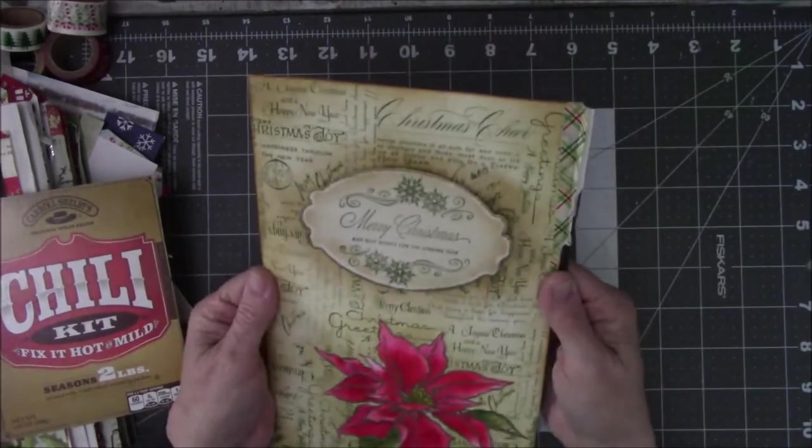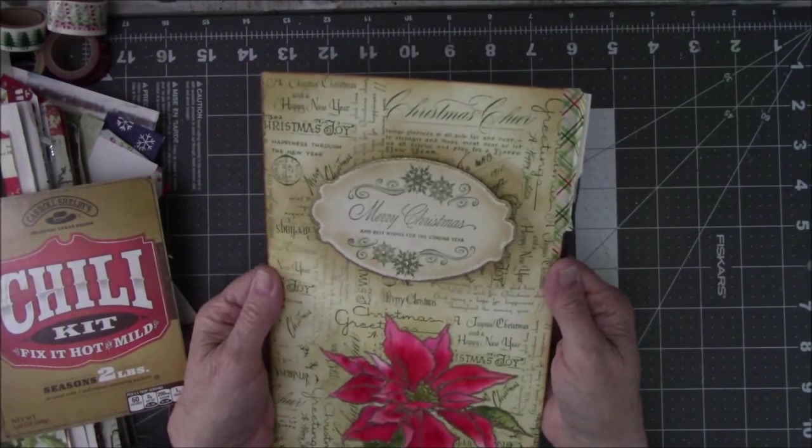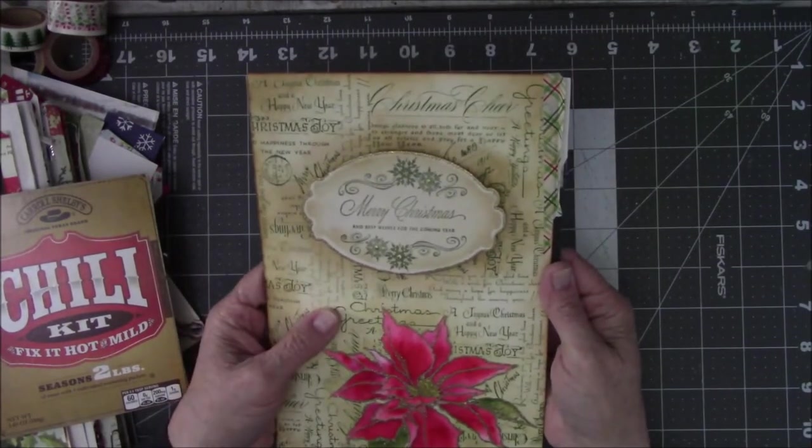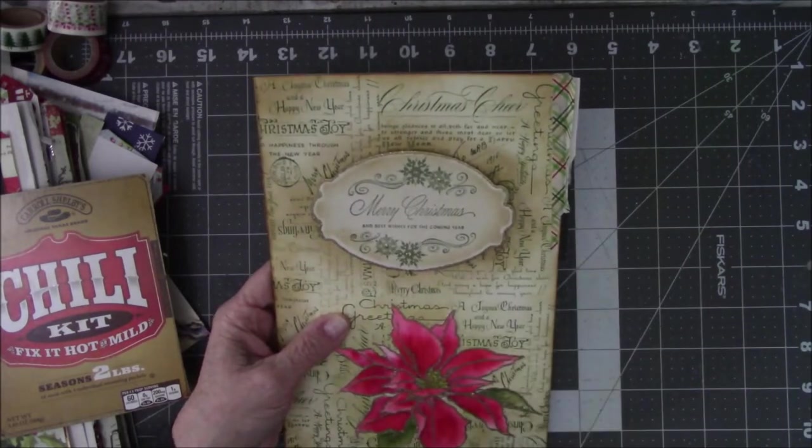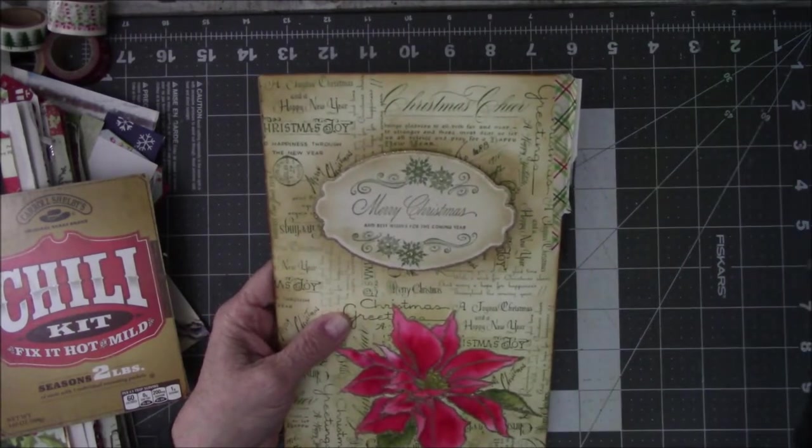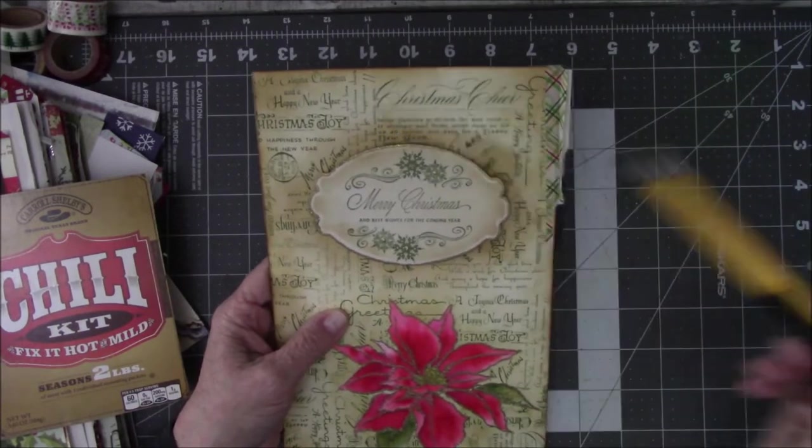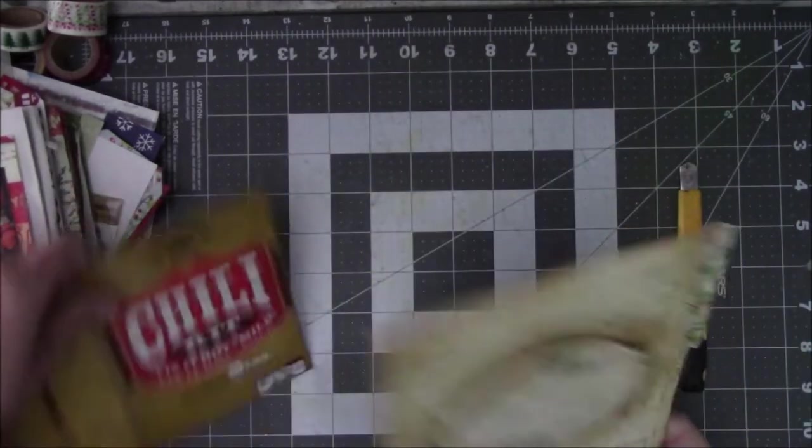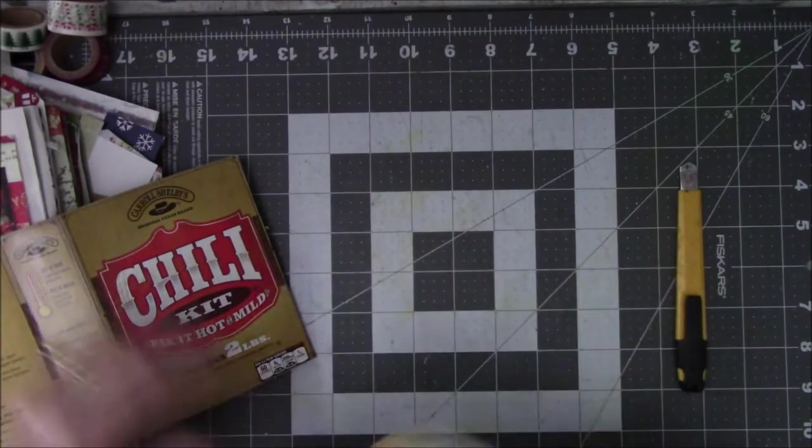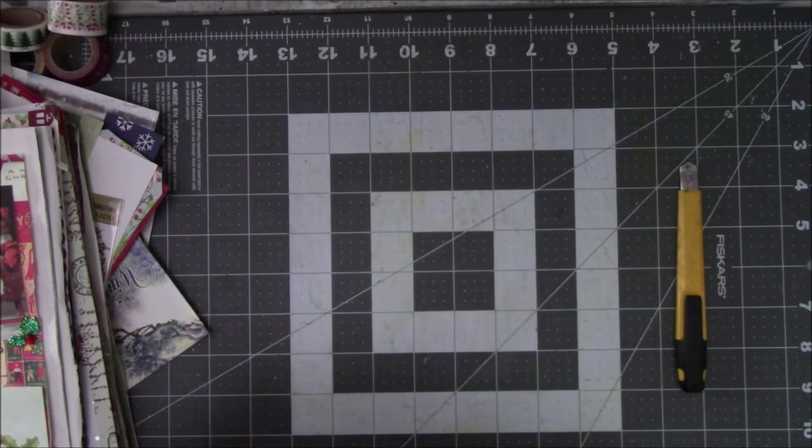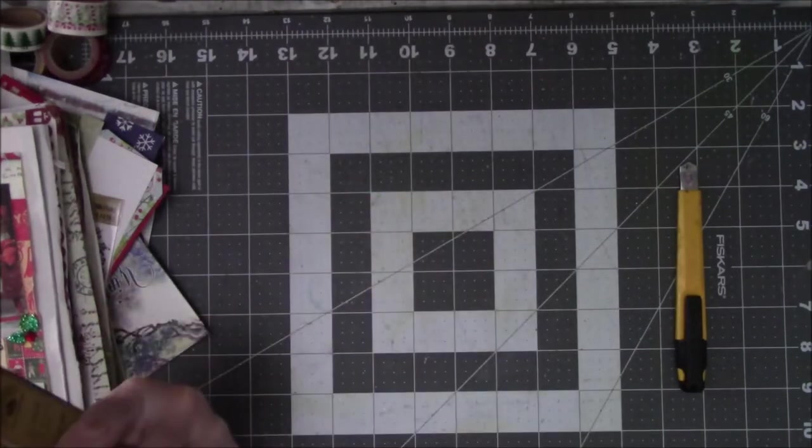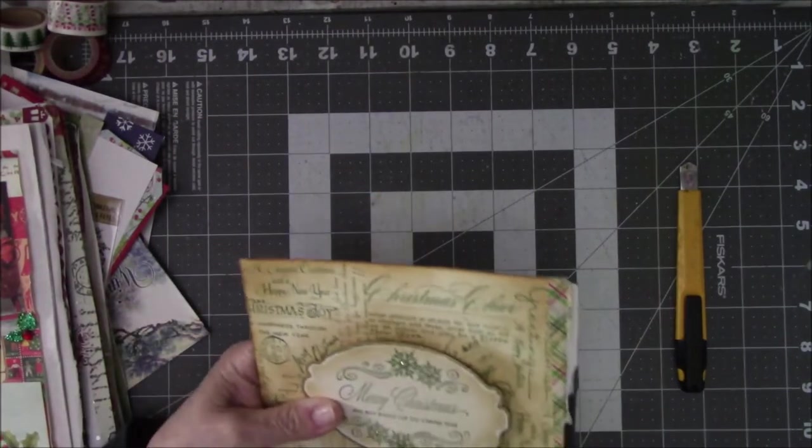While I was looking through there, I thought, wow, this will make a great cover. And then I got to looking at it, I thought, holy crud, this is too big for my box. Oh, contraire, Pierre. We have a cutter. So, what I think I'm going to do is, I'm going to put this on here and kind of look at it and do the judgmental thing on it. And then cut.